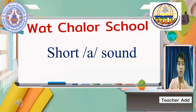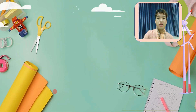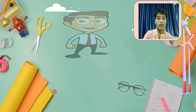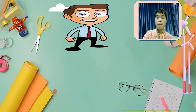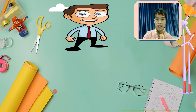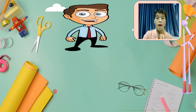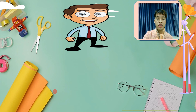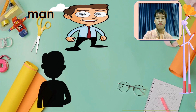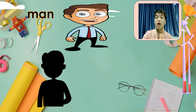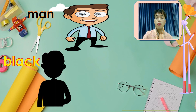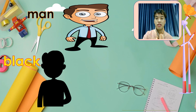Okay students, our first picture is 'man.' Again, man. M, m, man. Very good. Next we have 'black.' Black. B, b, black. Very good.